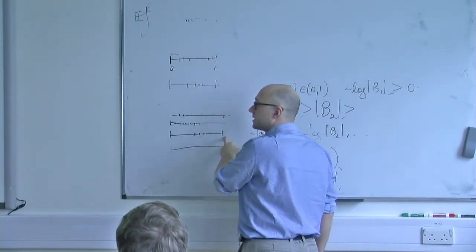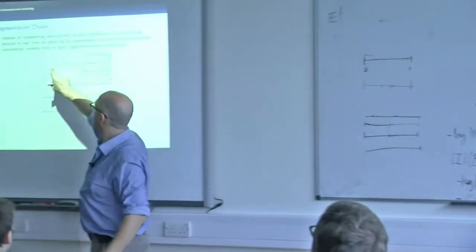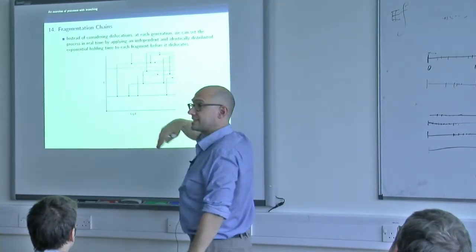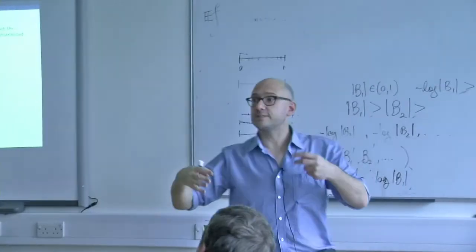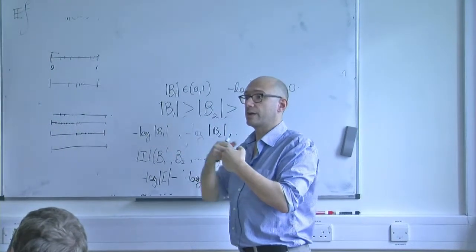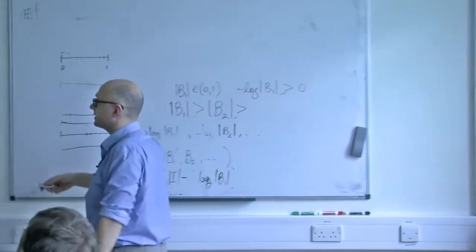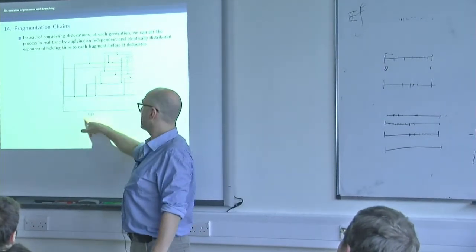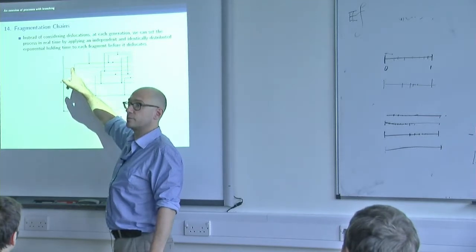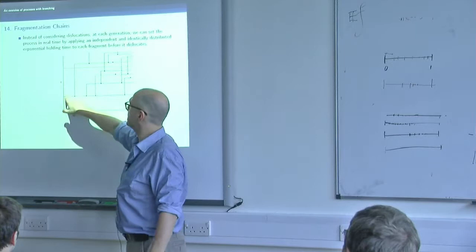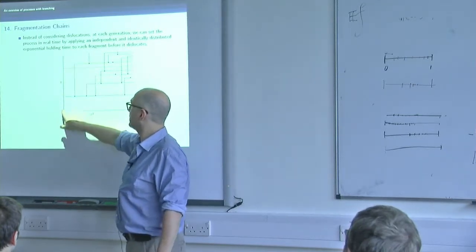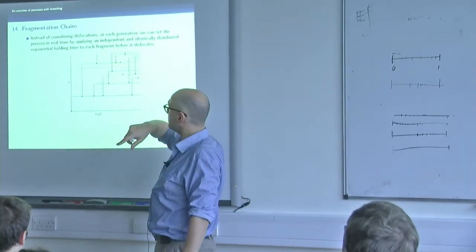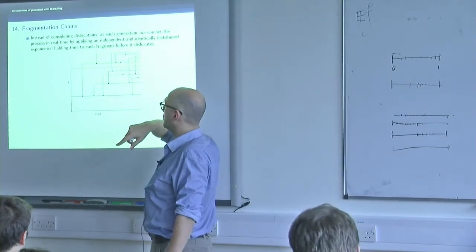At time t, what I see is a point process moving across the red line, and this point process is telling me the current size of all the lengths of all the current fragments at time t. In fact, it's even telling me them in order - remember, it's on the minus log scale, so small is big. So this would be the biggest fragment, the next biggest, and so on. In this picture, the biggest fragment comes from the biggest fragment of the initial fragmentation, but you could imagine a scenario where that was not true.